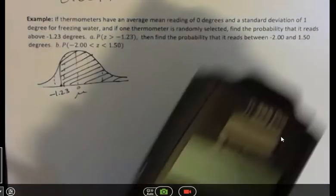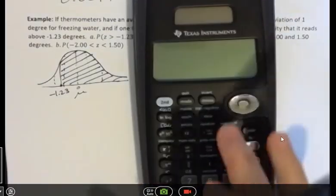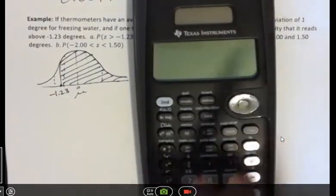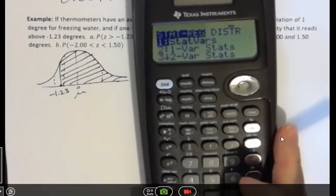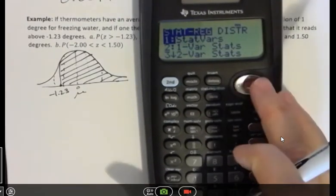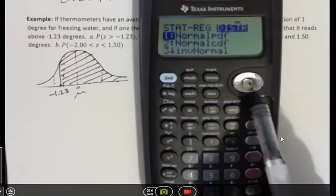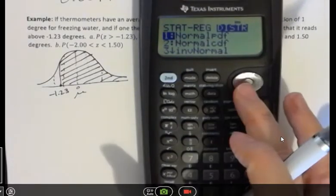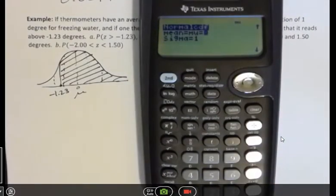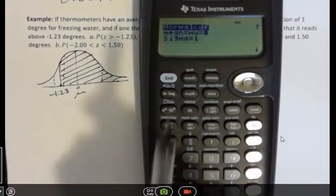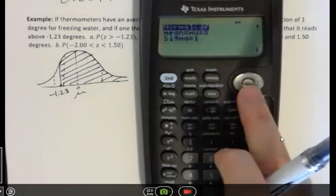So what we're going to do is do second function data. You can always clear your calculator to get rid of any old values. One to the right using our arrow buttons to get to distribution, and then one down to get to normal CDF, and then hit enter. Standardized is zero and one for the mean and standard deviation, sigma standing for standard deviation. So that's all set for me.